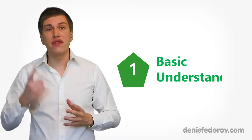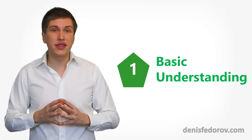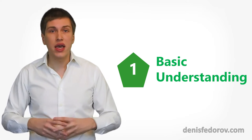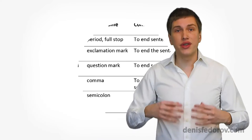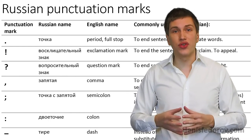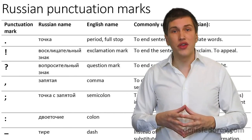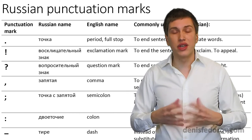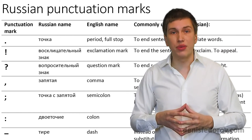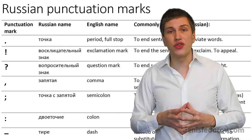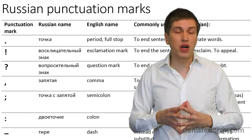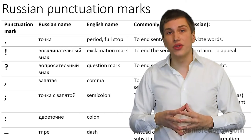Let's now achieve the next level 1 — a level of basic understanding. Let's start with the punctuation marks and which purposes they serve in Russian language. Here is the English-Russian translated list of four punctuation marks. The link to the PDF containing this list is in the description. Let's go through this table and learn the most essential information about these punctuation marks and how they are used in Russian.